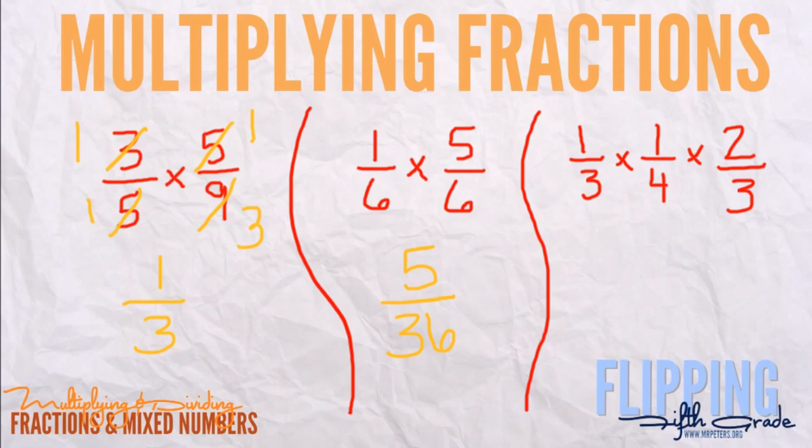Now let's look at the last one. Sometimes you can't simplify, but in this one you can. One and four you can't simplify, and one and three you can't. However, four and two you can. Two divided by two is one, and four divided by two is two. Now we can do our math: one times one times one gives us one. Three times two is six, times three is 18. So we get the answer of one-eighteenth.